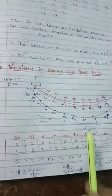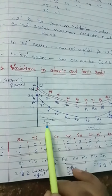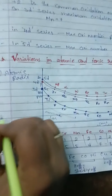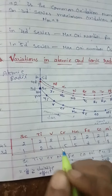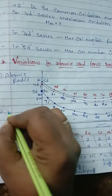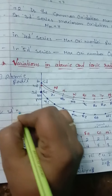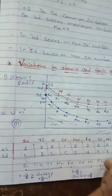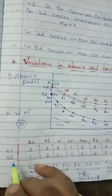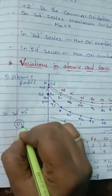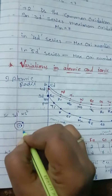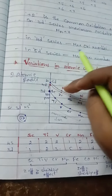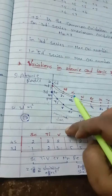First I will explain the concept and then we will discuss questions based on this. First, atomic radii is going to decrease. Taking scandium as an example: its electronic configuration is 3D1, 4S2. In the 3D shell, one electron is present; in 4S, two electrons are present.